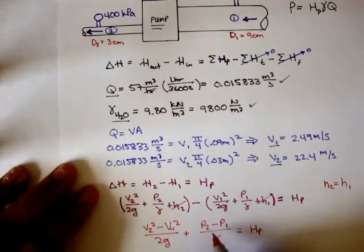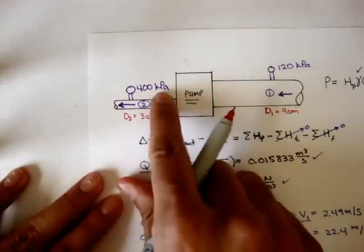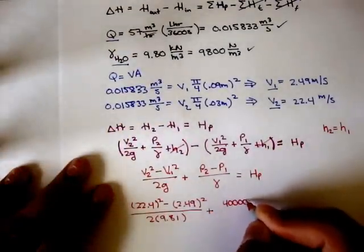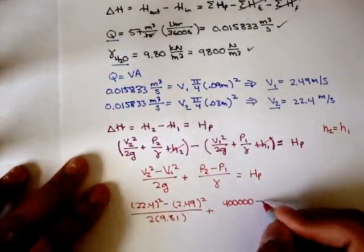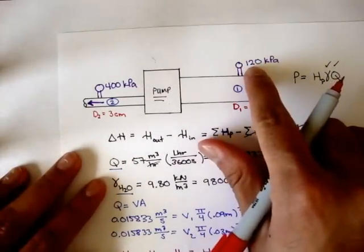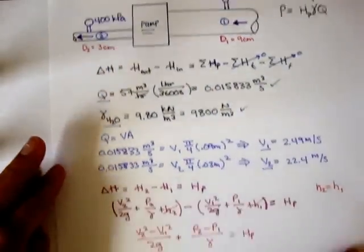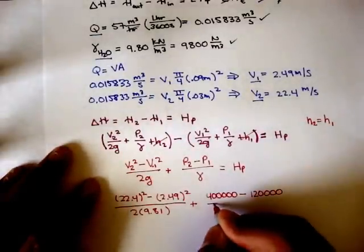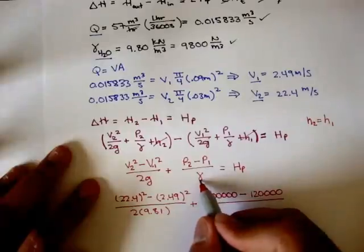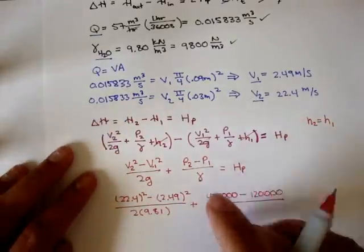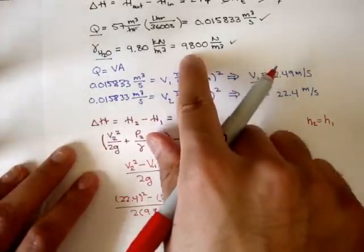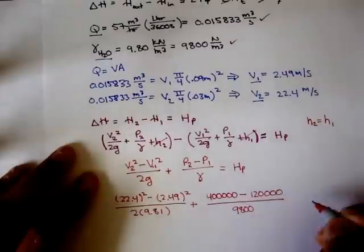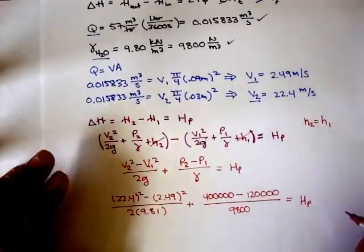So the pressure at 2 is 400,000 minus the pressure at 1 which is 120,000 pascals, over the specific weight of water which we found to be 9,800 newtons per meter cubed. And all of this is equal to the pump head.